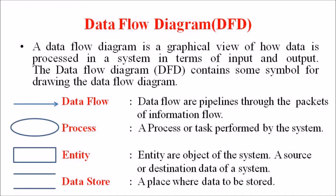The first symbol, data flow, is represented by an arrow — pipelines through which packets of information flow. The second symbol is the process: a task performed in a system, represented by an ellipse. Entities, which are objects of the system representing a source or destination of data, are shown as rectangles. The fourth symbol, data store, is a place where data is stored, represented by parallel lines.